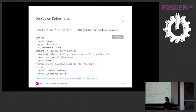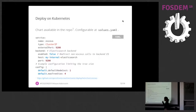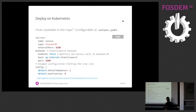This can also be deployed on Kubernetes, which is how we deploy it internally. We provide a sample Helm chart that includes the configuration as part of the values.yaml file so you can configure everything in one single place.